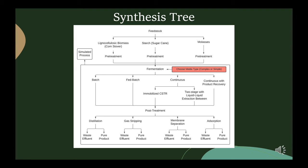Moving on to the post-treatment, we look at a few different options: distillation, gas stripping, membrane separation, or absorption. All of these are going to produce a waste stream and a pure product. Decisions were made based on what kinds of product concentrations we could achieve, and it ultimately turned out that distillation was very useful for separating butanol, since butanol's relative volatility is so much different than the other products.